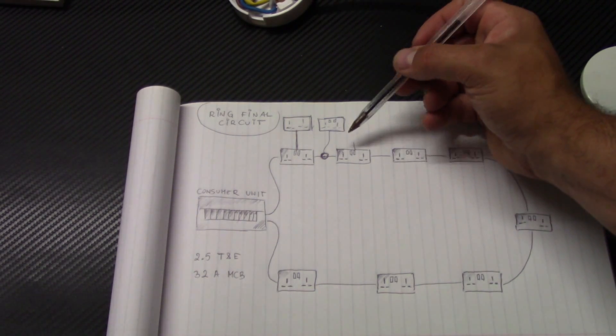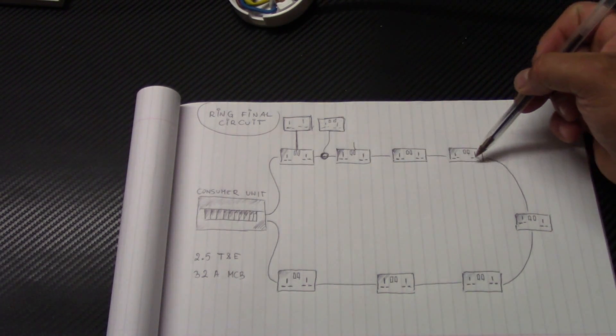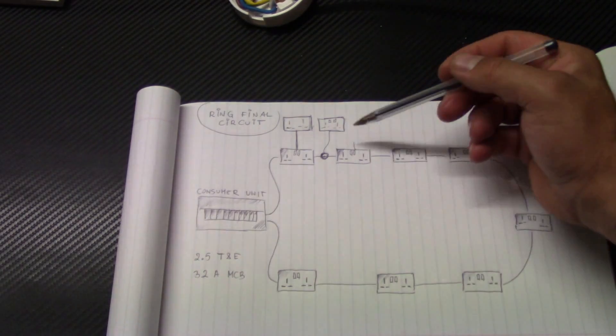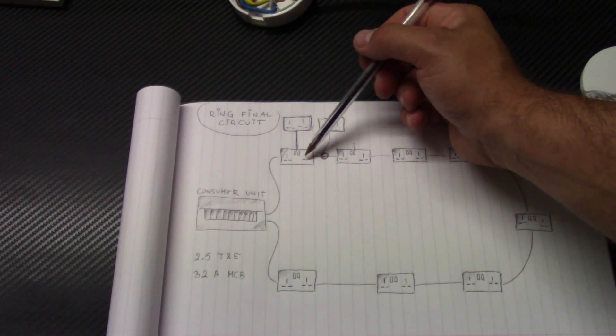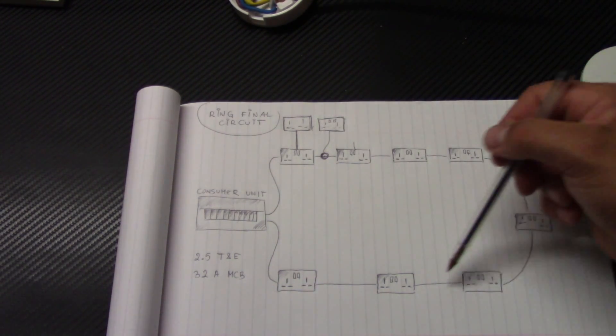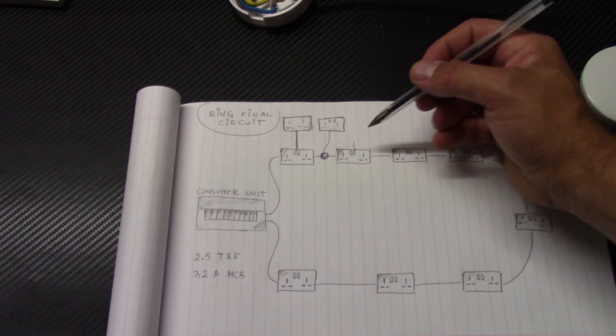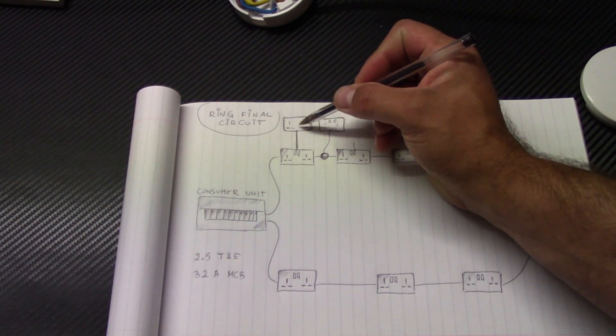They are limited by the number of sockets that you've got on the ring. For example, if you've got in this ring eight sockets, the unfused spare you can have only eight.